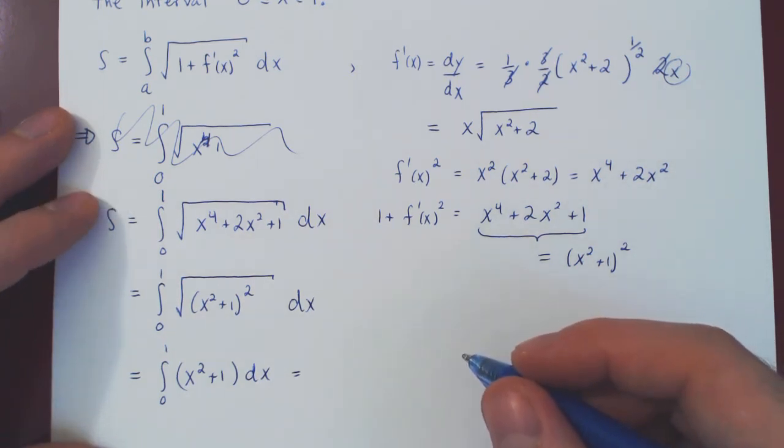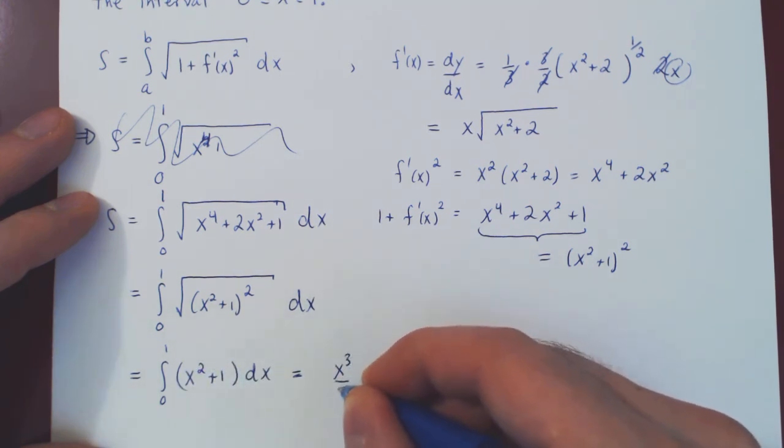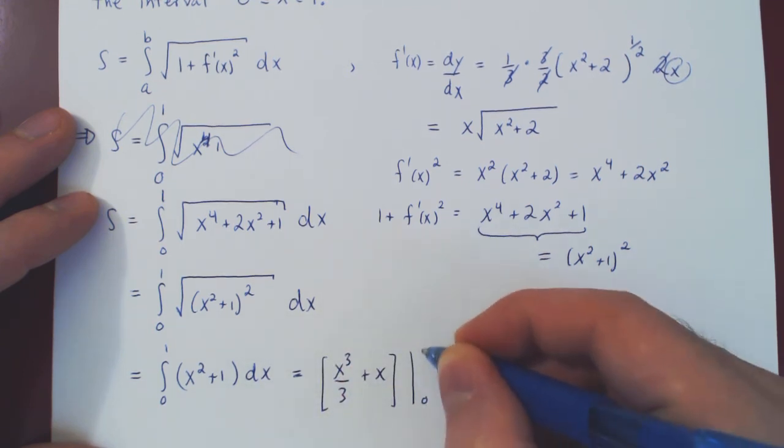And now we can evaluate using the fundamental theorem of calculus. So we find our antiderivative by the power rule. Very easy. x cubed over 3 plus x.